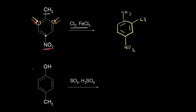Let's look at this next reaction. I can identify this as a sulfonation reaction, so I'm going to put an SO3H group onto my benzene ring. The question is, where will that group go? Once again, I analyze my substituents. First, I look at the OH group, which I know is an ortho-para director.